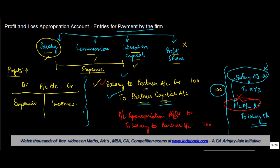When you prepare the Profit and Loss Appropriation Account, you post these entries as follows: prepare a P&L Appropriation Account with a debit side and a credit side. Then on the debit side: P&L Appropriation Account debit to Salary to Partners.